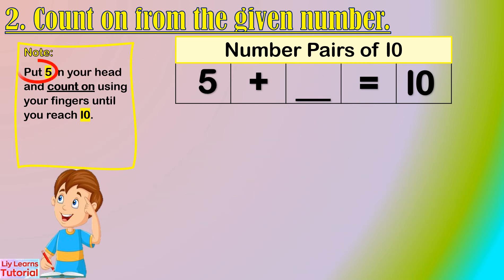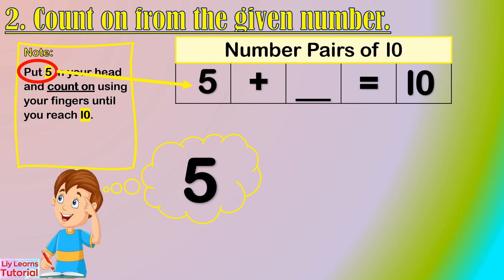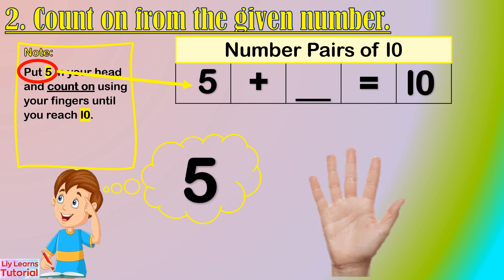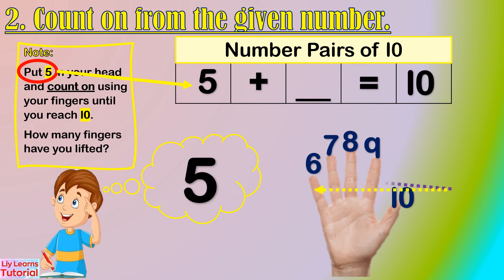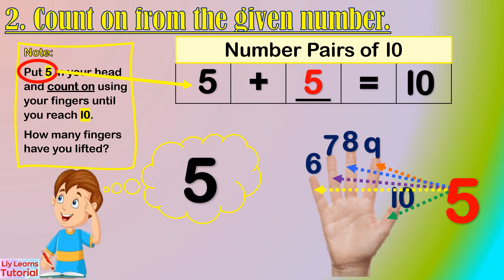Now we start from 5. Hold 5 in your head, then count on: 5, 6, 7, 8, 9, 10. How many fingers have you lifted? 1, 2, 3, 4, 5 — that's 5 fingers. So the number pair of 5 is 5.